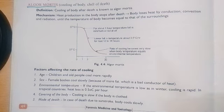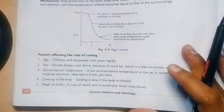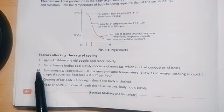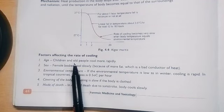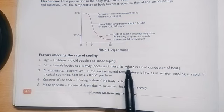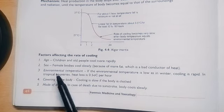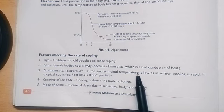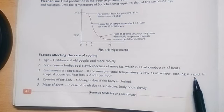What are the factors that affect the rate of cooling? First, age - children and old people cool more rapidly. Next, sex - female bodies cool slowly because of more fat, which is a bad conductor of heat. Environmental temperature - if the environmental temperature is low as in winters, cooling is rapid.